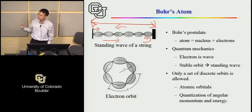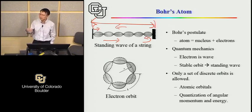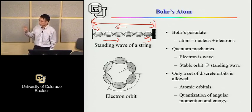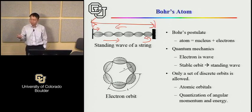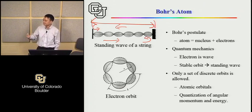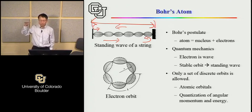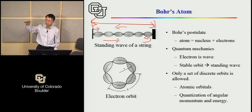The corollary is that the angular momentum of the electron is also quantized. This is the birth of quantum mechanics and the quantum mechanical description of an atom. Bohr's model predicts discrete energy levels — that's the key takeaway. Not all energies are allowed; only certain discrete, allowed energy levels exist for electrons.